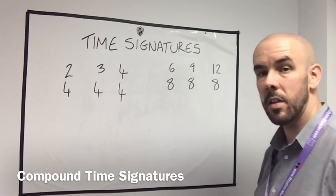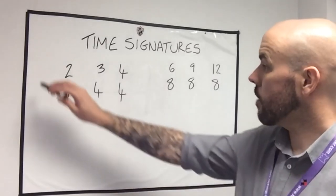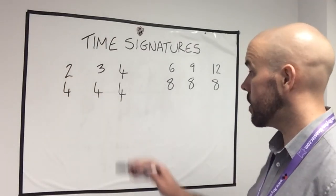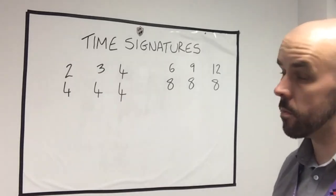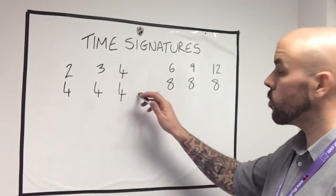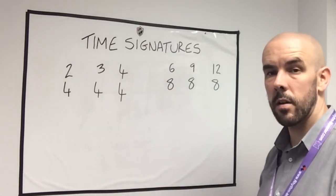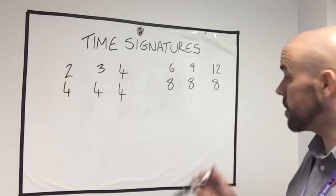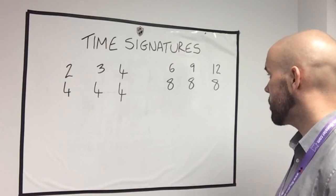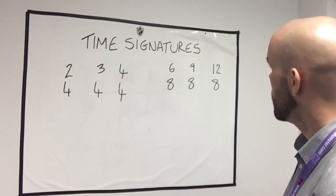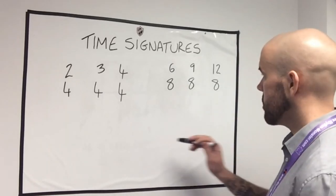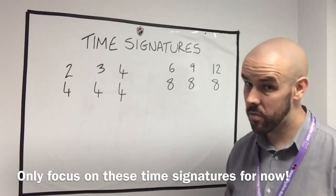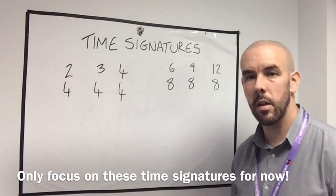You will get other time signatures. There's 2-2, where it would be two beats per bar with minimums — two minimums per bar. You can get 5-4 where it's five beats per bar and each beat is a crotchet. You can also get things like 7-8, which is seven quavers to the bar. Don't worry too much about these other time signatures — the main ones are the ones we play all the time in pipe band drumming.